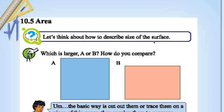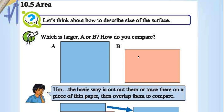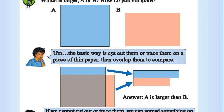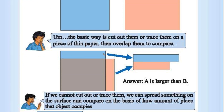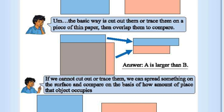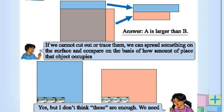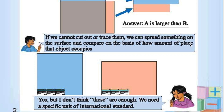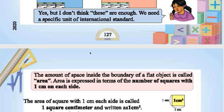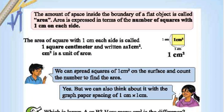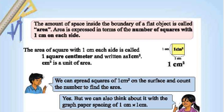Area — let's think about how to describe the size of a surface. Which is larger here? How do we compare? The basic way is to cut them out or paste them on a piece of paper, then overlap them to compare. From the figure, we can see that A is larger than B. If we cannot cut or paste them, we can spread something on the surface and compare. The space inside the boundary of a flat object is called Area.